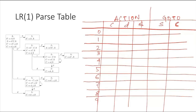Looking at state I0: for capital S it goes to I1, so we write 1 here. For capital C it goes to I2, so we put 2 here. For small c it goes to I3, so it is shift 3. For D it goes to I4, so S4 here. There is no reduction, so we move on.